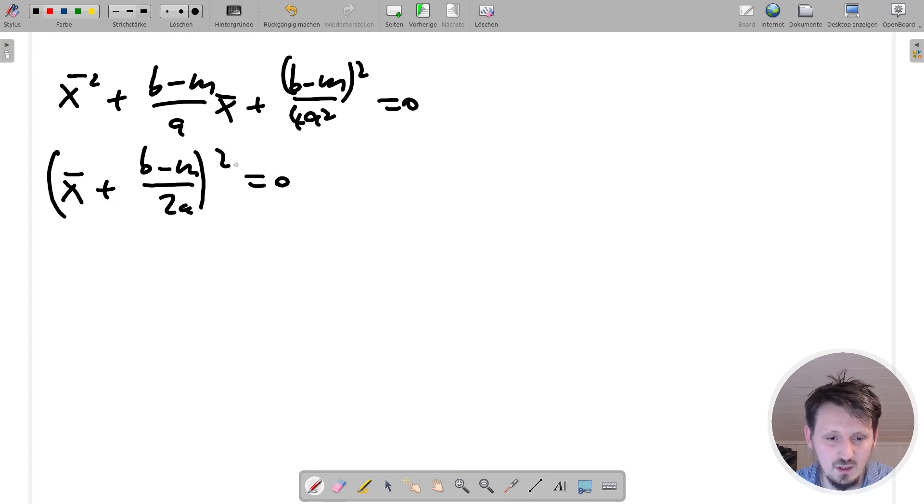So what we have now here is just simple quadratic equation. So now in this case, we don't have any additional constant, which means we can directly calculate the square root here in this case. And when we do that, then we get at the end as a result X bar plus two minus, plus, plus B minus M divided by two A equal to zero.